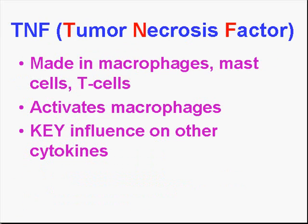Let's talk about tumor necrosis factor — one of the most widely studied cytokines or growth factors. It's made by macrophages and it also aggravates macrophages, so this is autocrine. It has a key controlling influence on other cytokines. Very often when they talk about a process which is controlling the other cytokines, they'll always list TNF — especially TNF alpha — as well as the interleukins at the top of the list, because those two are not only prime ones but prime controllers of others as well.